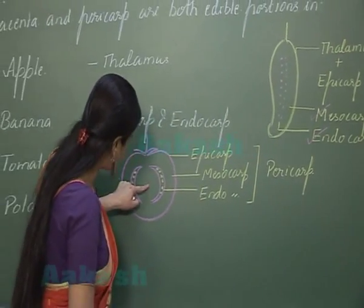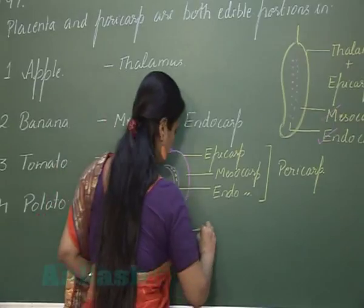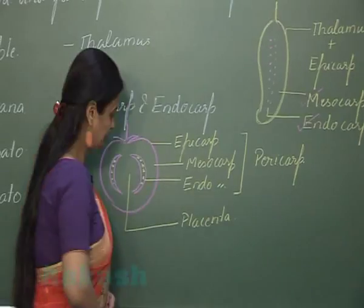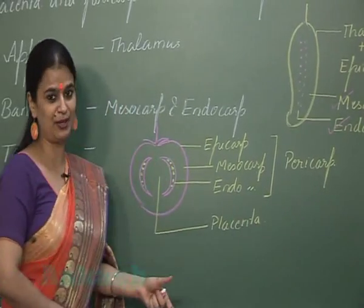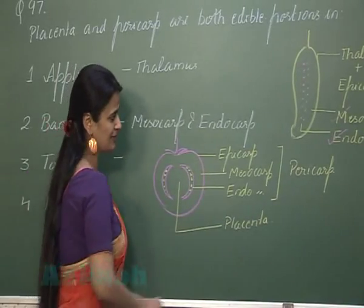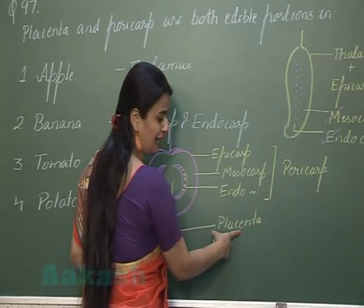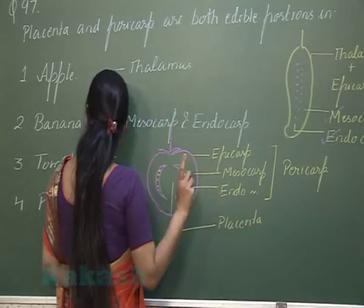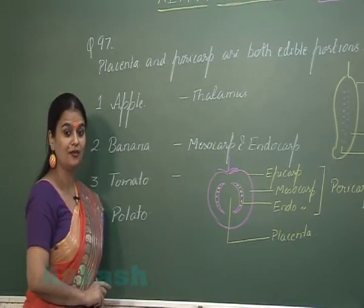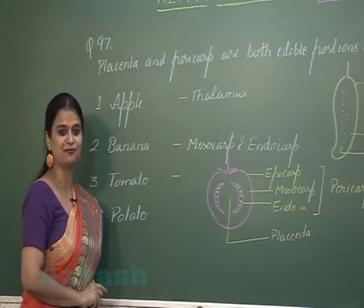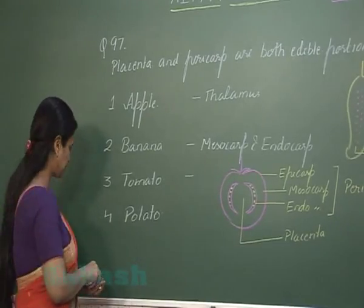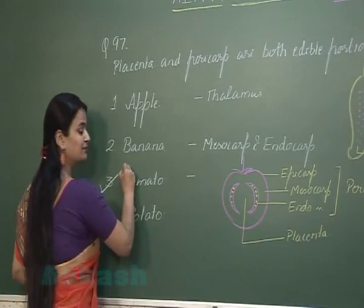The innermost part present here represents placenta. Now except the seeds, all parts present in the tomato fruit are edible — that is the fruit wall, pericarp, and placenta. Coming to the last option, potato: the edible part is the underground stem known as tuber. Amongst the four options, the correct answer is tomato.